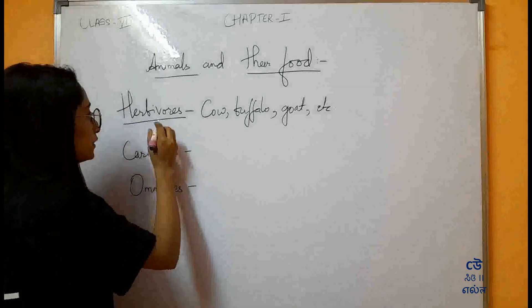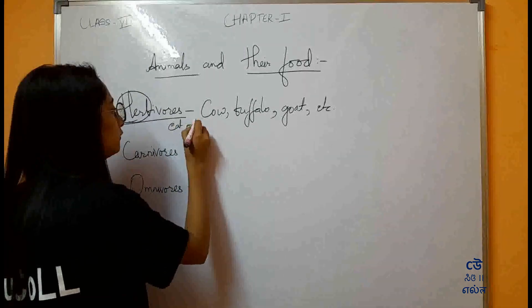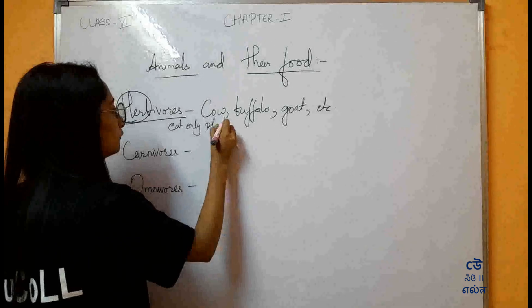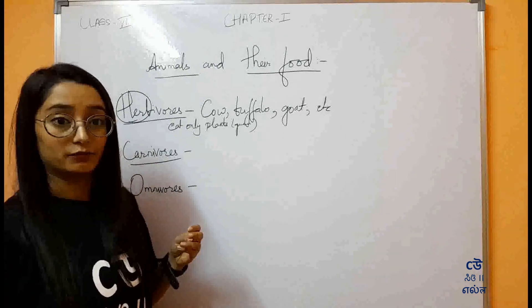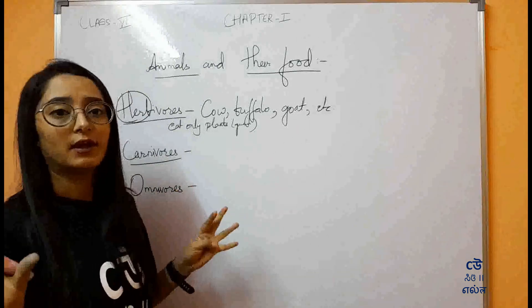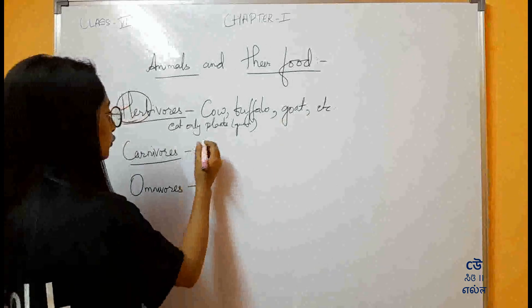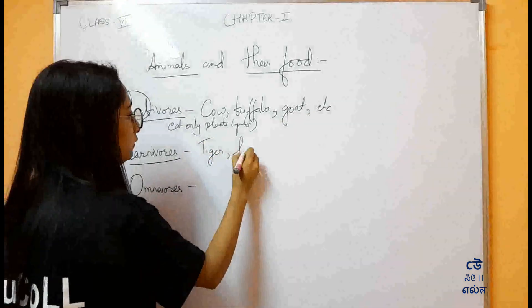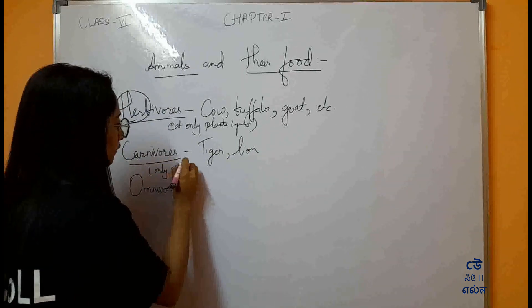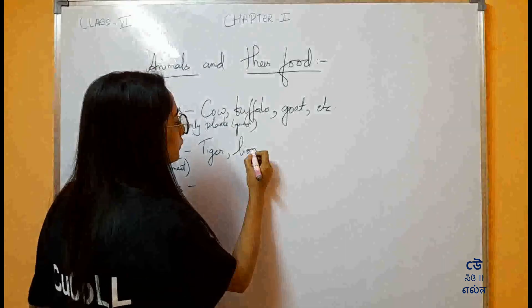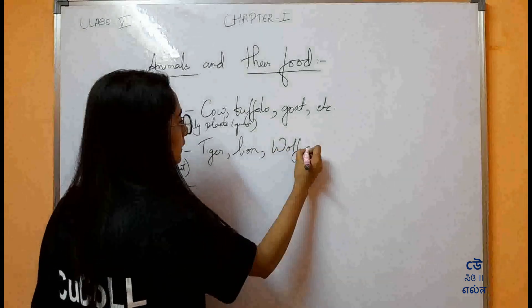Carnivores are that category of animals which eats only meat — that is, which eats only other animals. Those are like tiger, lion, wolf, etc.